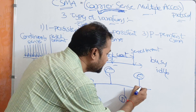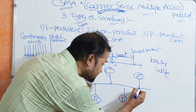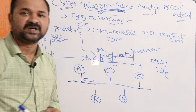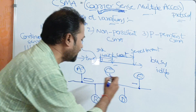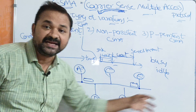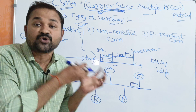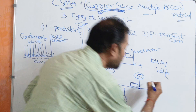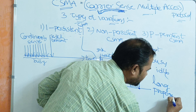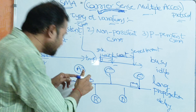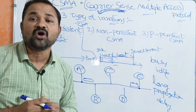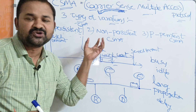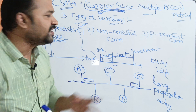Suppose station E also wants to transmit data to A. E checks the carrier at its local point and finds it idle, so it starts transmitting a frame to A. During transmission, the two frames collide in the middle of the channel, resulting in a collision. This collision occurs because of long propagation delay — each frame has to travel a longer distance to reach the destination.